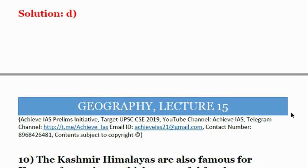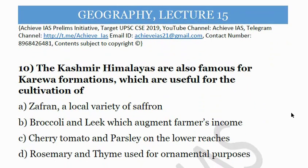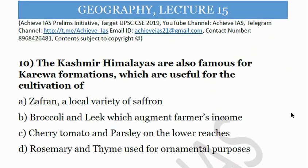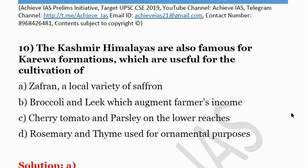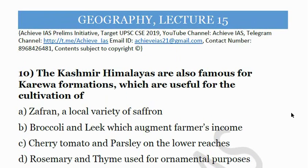Tenth question: The Kashmir Himalayas are famous for Karewa formations, which are useful for the cultivation of — A: Zafran, a local variety of saffron; B: broccoli and leek; C: cherry tomato and parsley on lower reaches; D: rosemary and thyme for ornamental purposes. These Karewas are helpful for the cultivation of Zafran, a local variety of saffron. Answer is A.